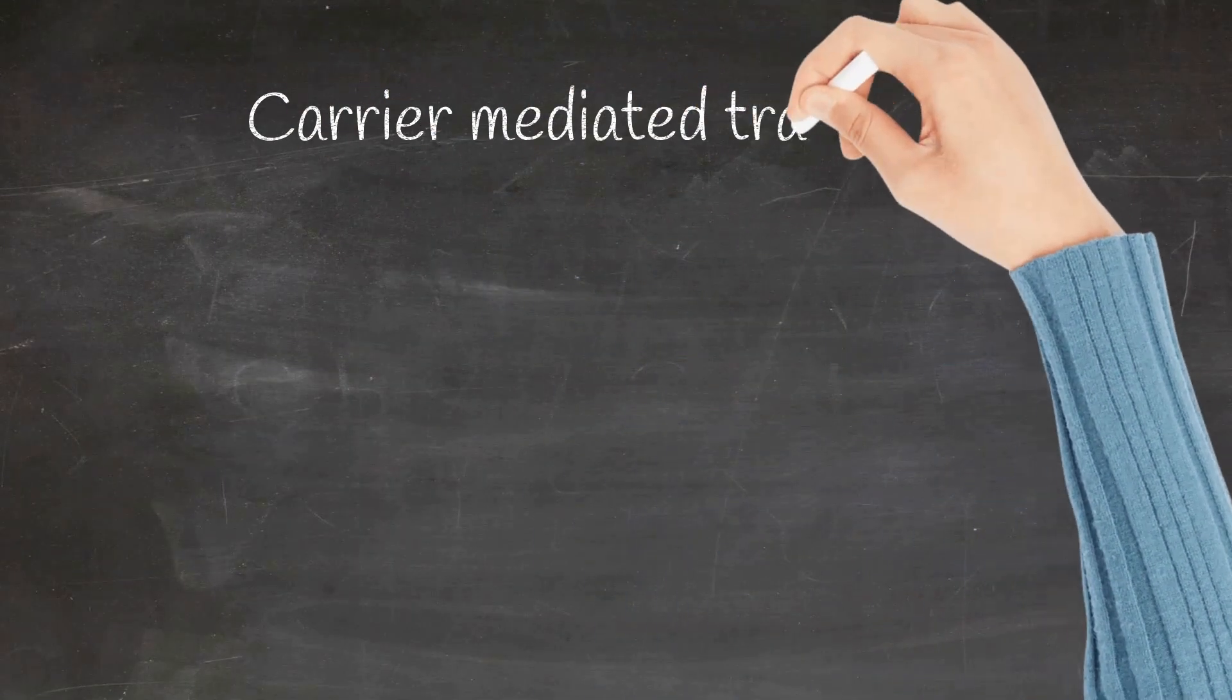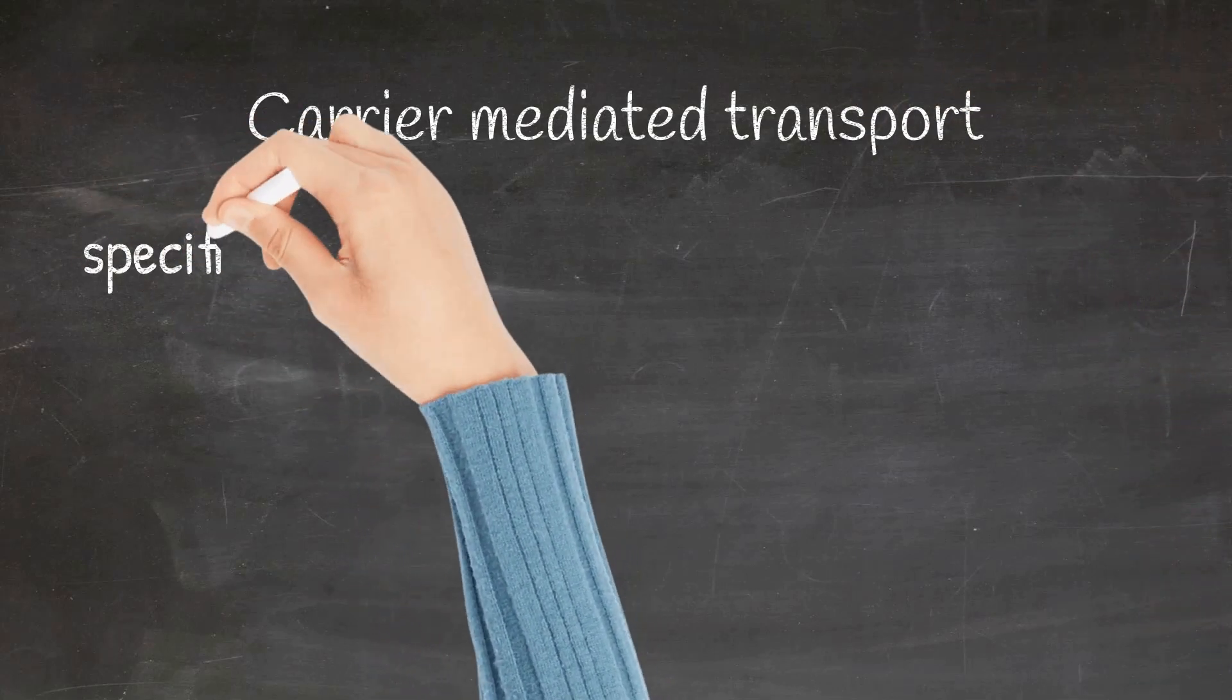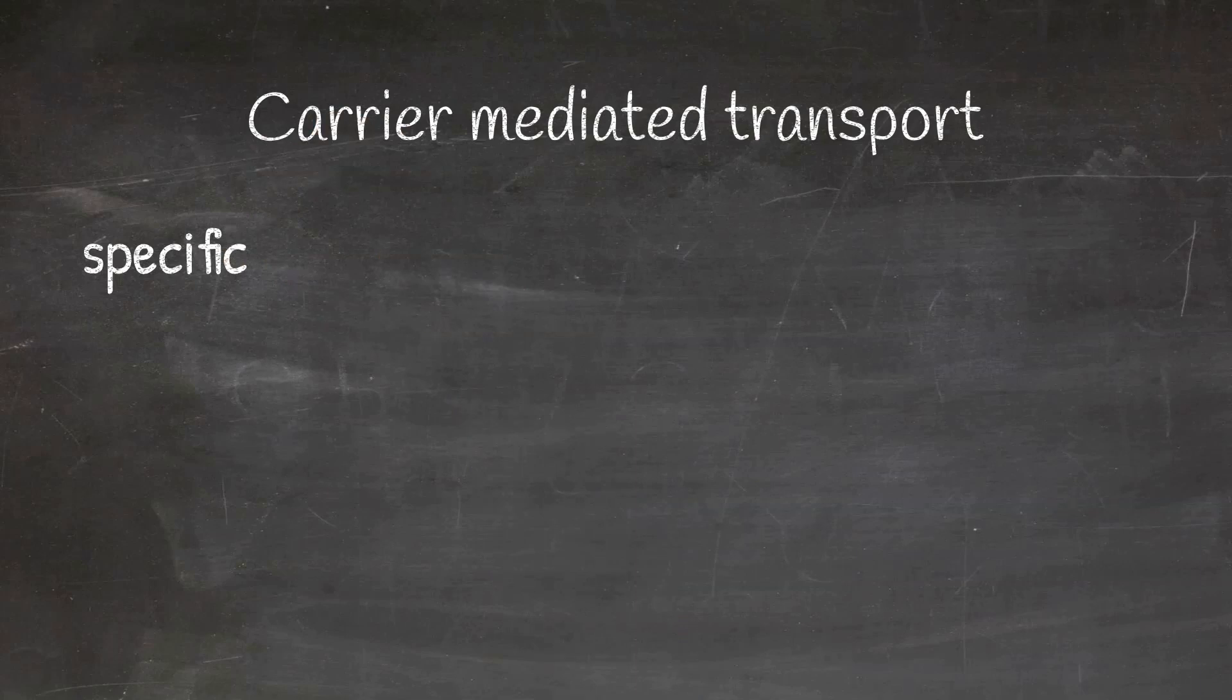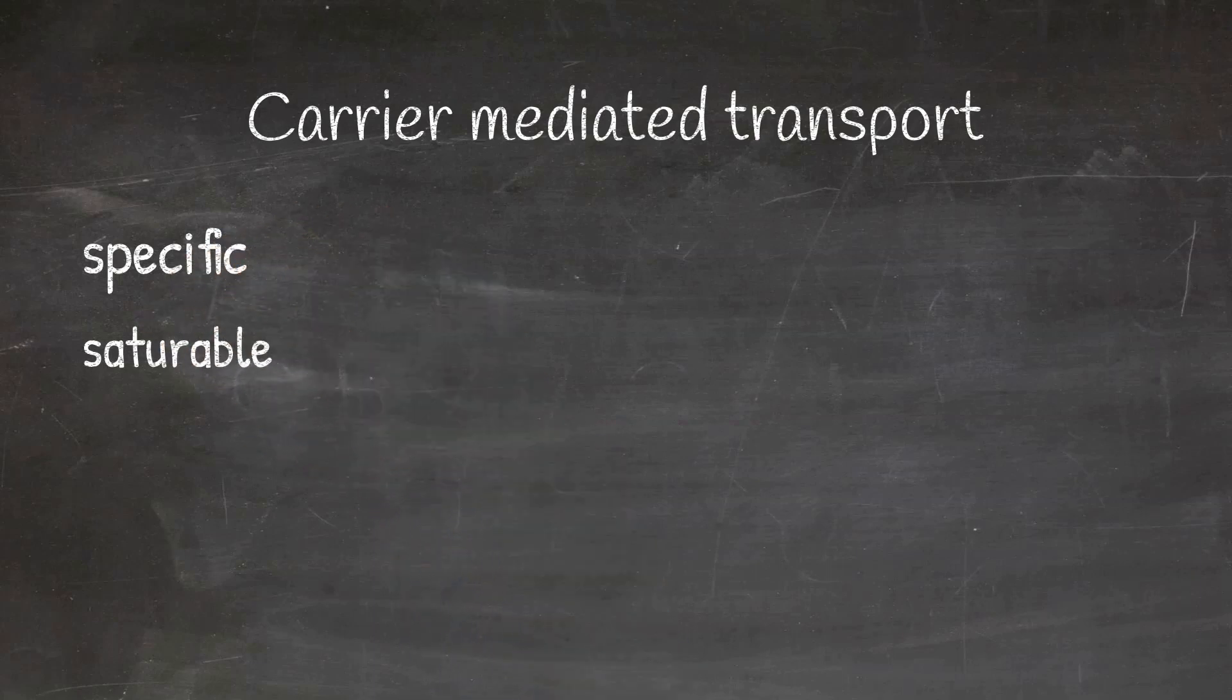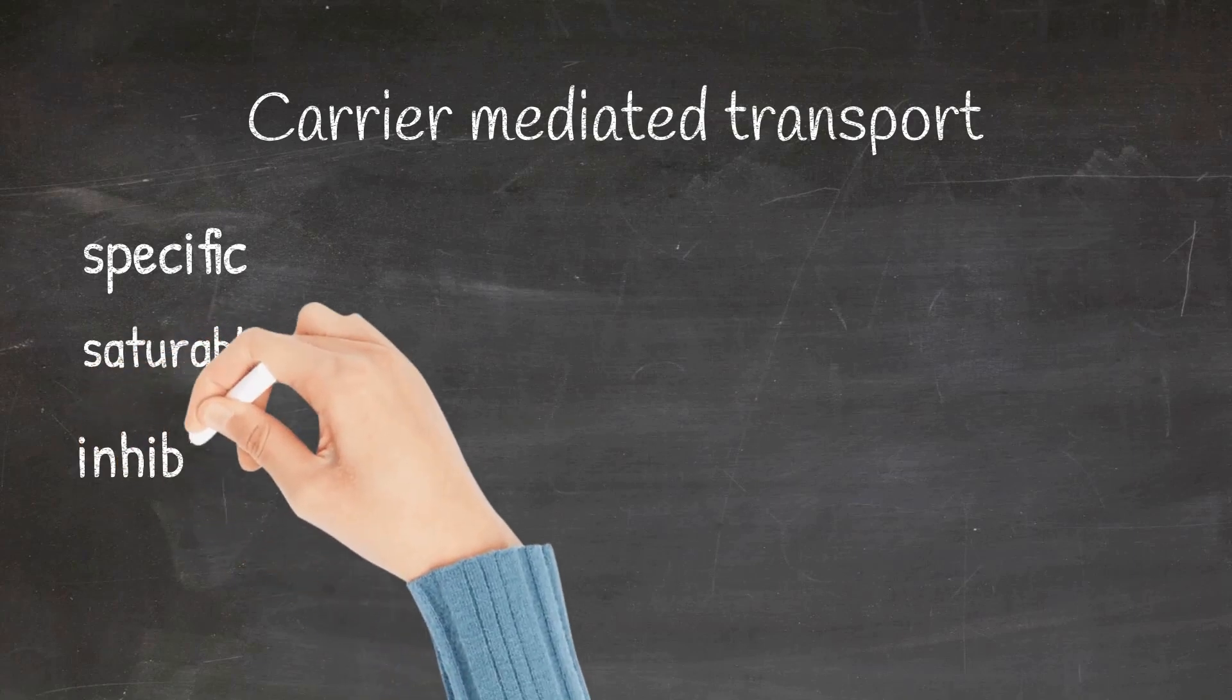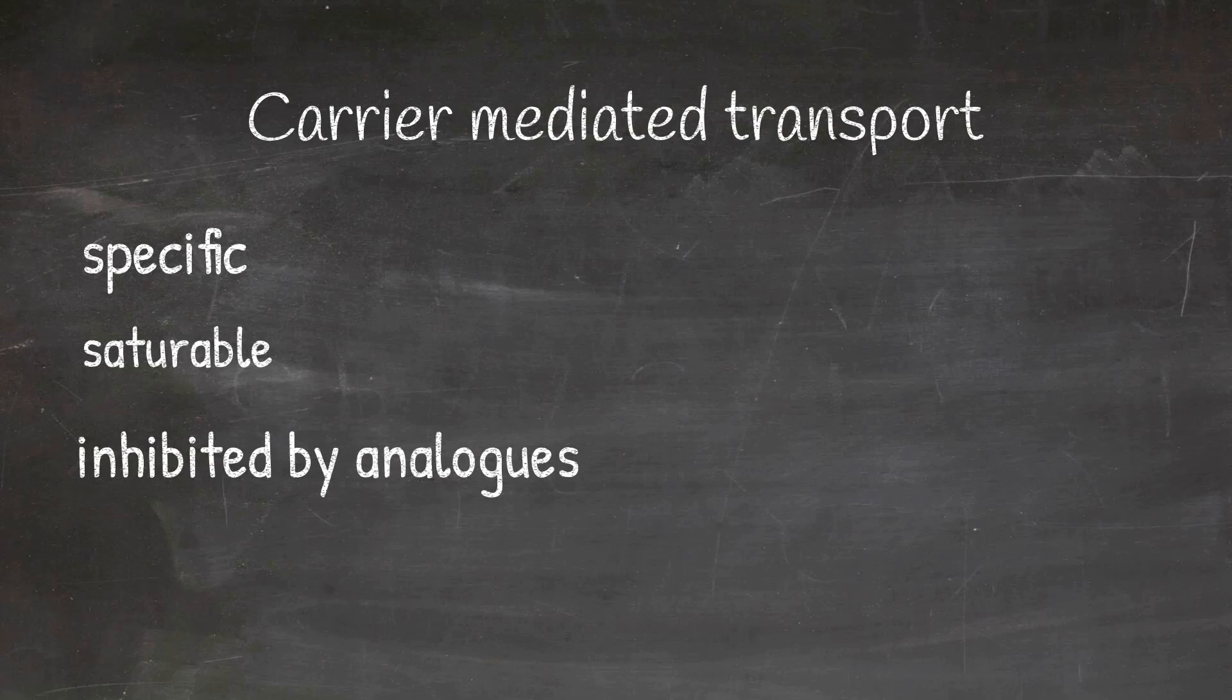Next, we will move on to carrier-mediated transport. This process of drug transport is specific because specific carriers are involved in the transport of the drug. Since specific carriers are involved, this process is saturable. That means the drug transport depends upon the number of carrier molecules that are available. The process of carrier-mediated transport can be inhibited by analogues of the drug.